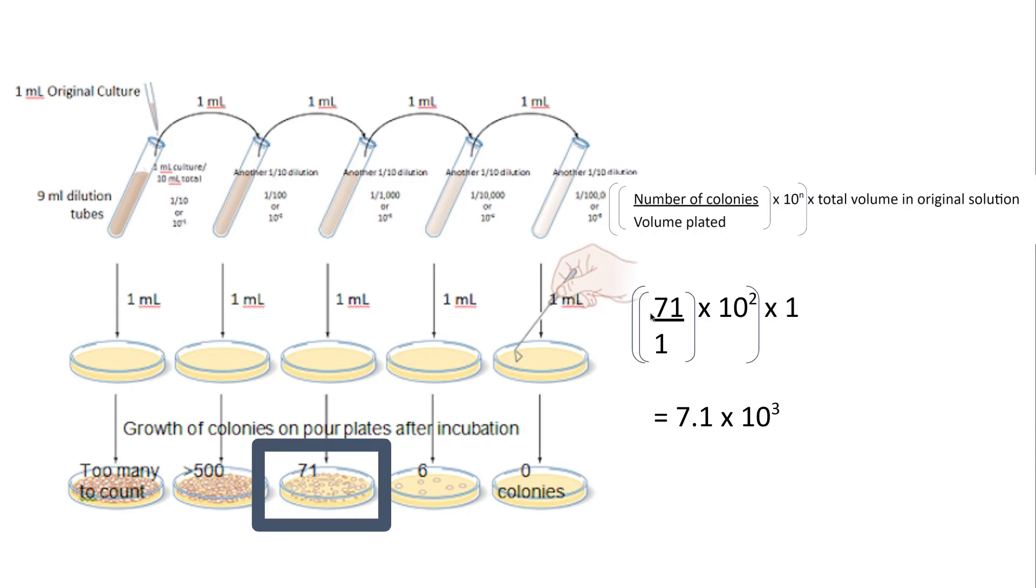So you can see about 71, 71 is the number of colonies on this plate, divided by the volume plated, which you can see here is one mil, and then times that by 10 to the power 2, 10 because I'm diluting by 10 each time and I've diluted twice to get to that particular culture, that third one. I'm then going to times by the original volume in the original solution, which in this case is 1 mil in the original solution, which gives me 7.1 times 10 to the 3.